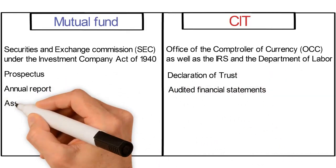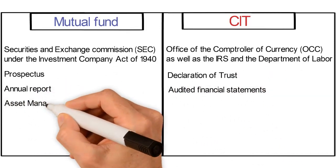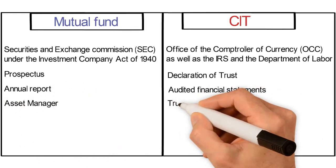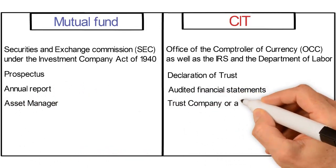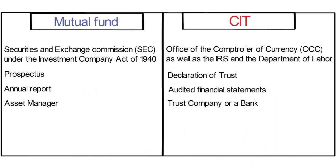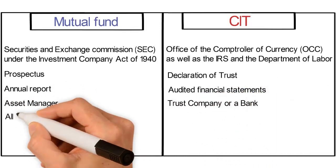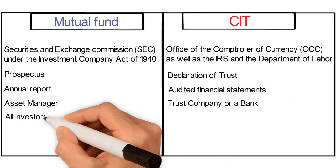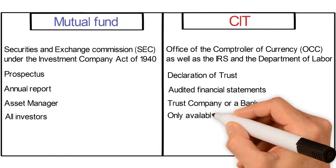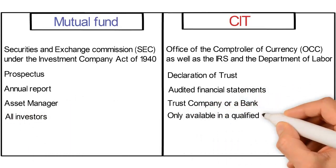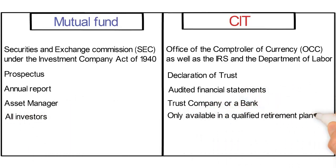A mutual fund is maintained by an asset manager, while a CIT is maintained by a trust company or a bank. Mutual funds are available to all investors. A CIT is only available in a qualified retirement plan.